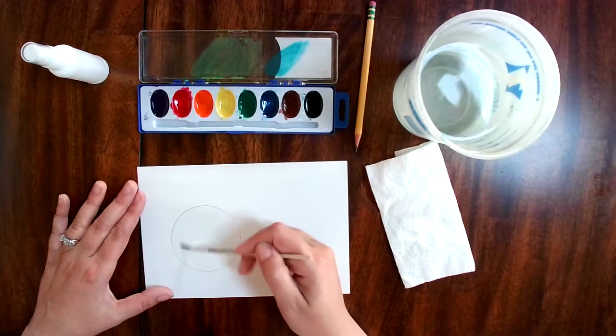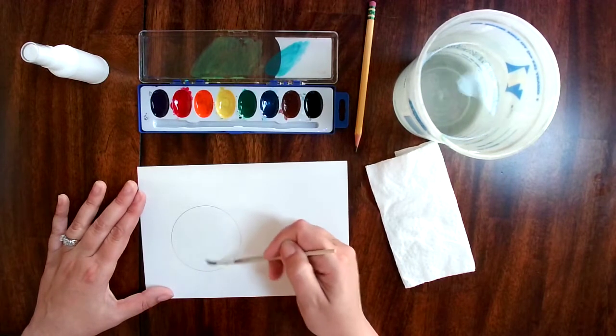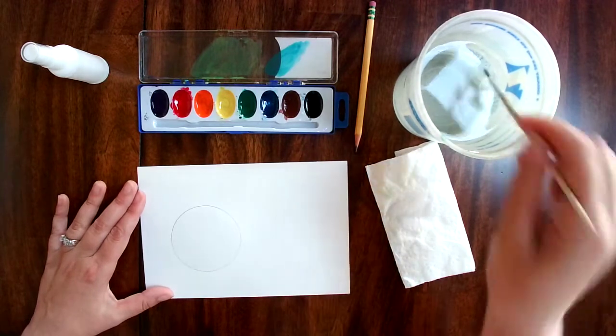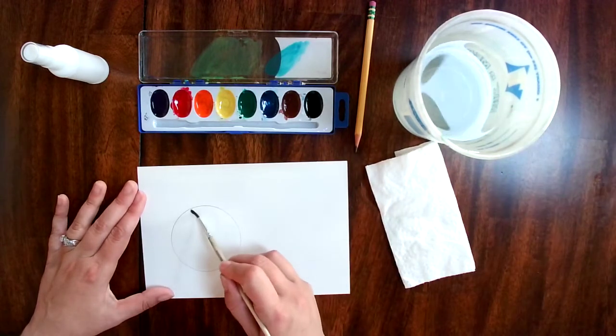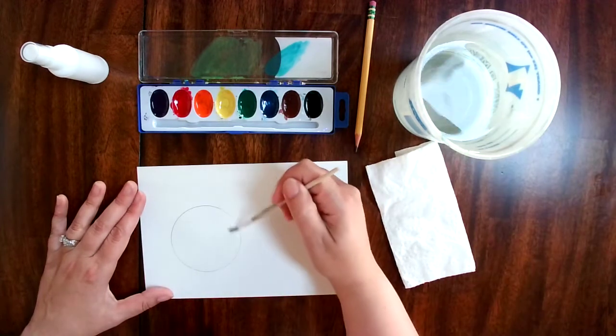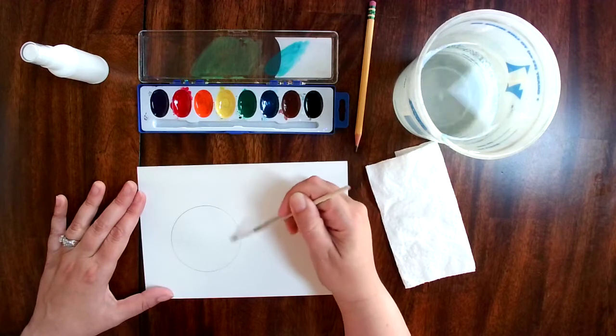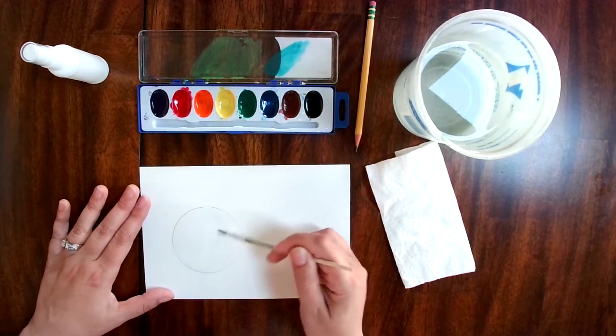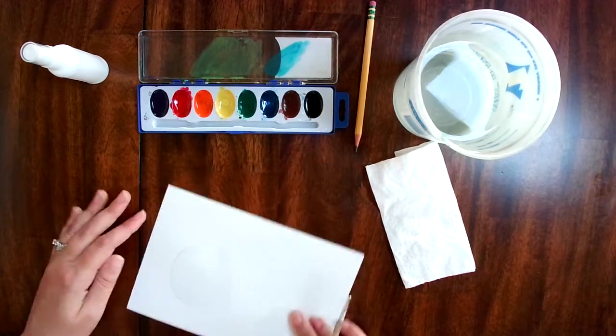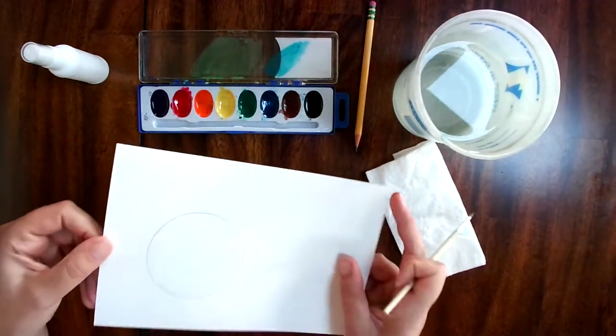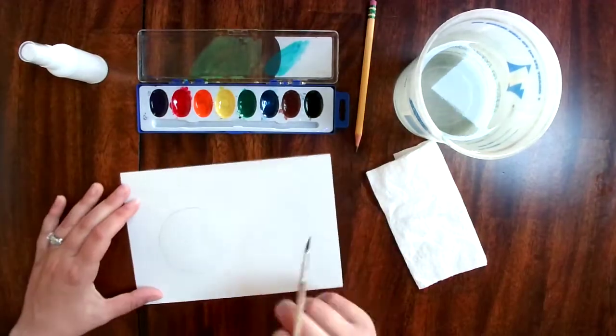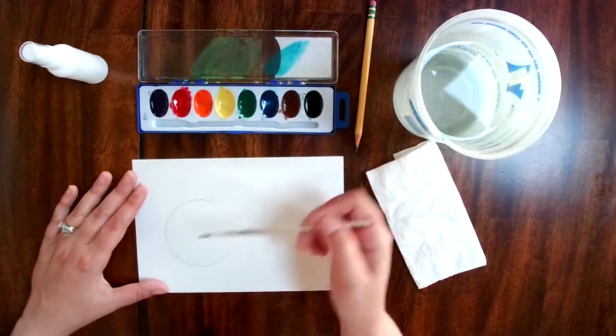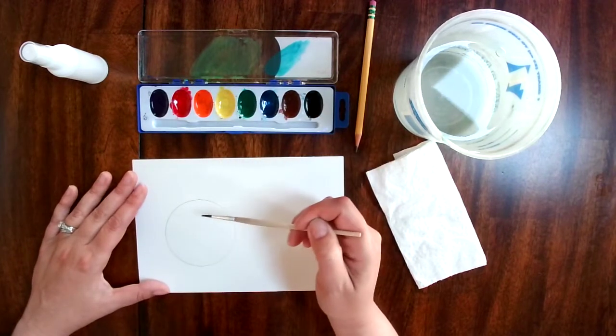I want this to be really wet because we're going to be using a wet-on-wet technique that we talked about before, so I want this paint to spread really easily in here. I want the paper to be shiny when I look at it from the side. Okay, I'm gonna have a red and orange planet to stand out from the dark background of space.